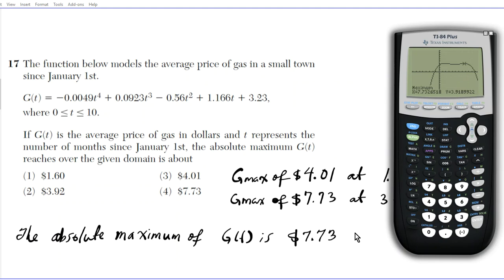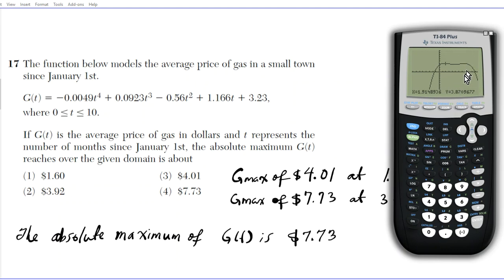Now let's use the second approach, which involves the Fmax function. The benefit is that you don't get tricked into selecting the wrong maximum. Looking at this graph, you might think the two maxima are the same because of pixelation. When you use the Fmax function, you can't be deceived — it gives you the exact absolute maximum.